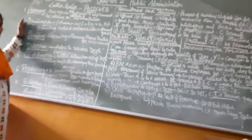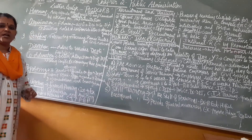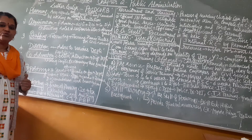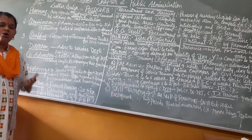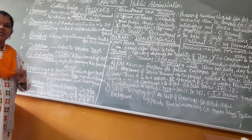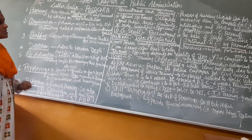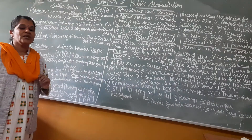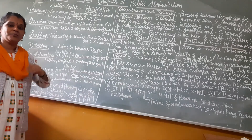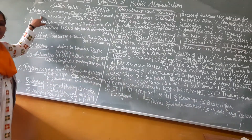Let us study each function one by one. First is planning. Even in our day-to-day life, suppose you want to go for a trip — first we plan: what to do, how to do, when to do, where to go. Similarly, the government first plans before performing any function. Any agenda it seeks to implement requires working out methods of implementation — first making the plan, then putting it into practice, which we call implementation of the plan.